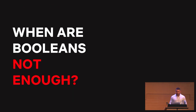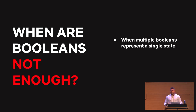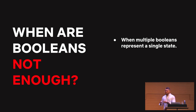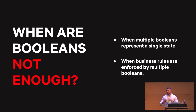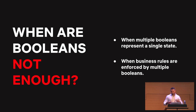So when are booleans not enough? When you have multiple booleans representing a single state — if you find yourself checking multiple booleans to decide what the state of an object is, something smells fishy and there's got to be a better way. Also, when business rules are informed by multiple booleans: if you're checking multiple booleans, constants, or attributes to decide whether you can perform an action, you probably need to change your approach.